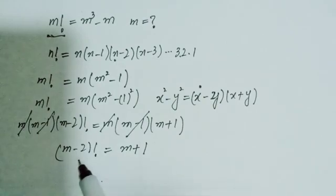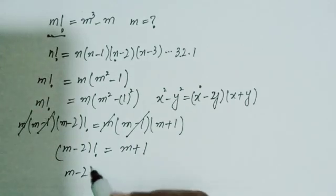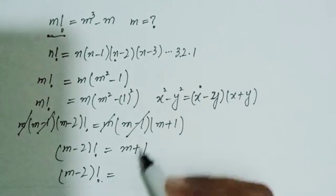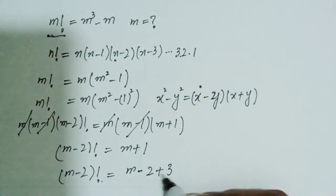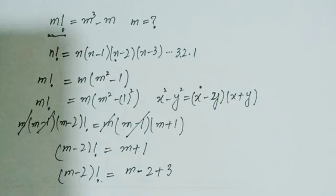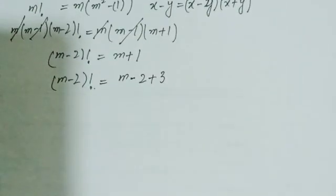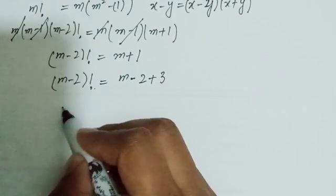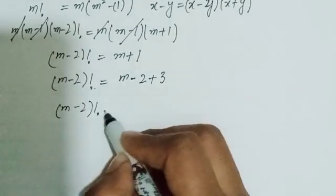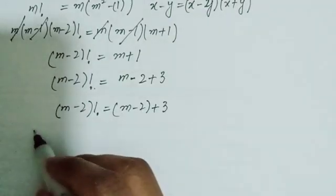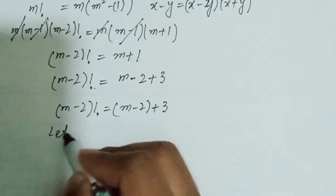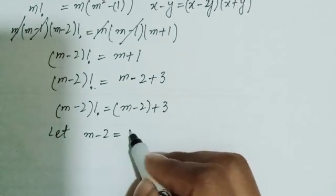So here I can write m plus 1 in terms of m minus 2. That is: (m minus 2) factorial equals (m minus 2) plus 3, because minus 2 plus 3 gives m plus 1 again. So I write (m minus 2) factorial equals (m minus 2) plus 3.